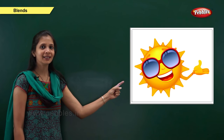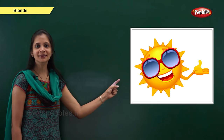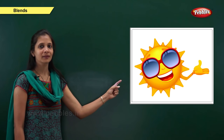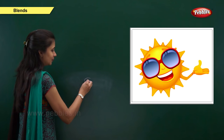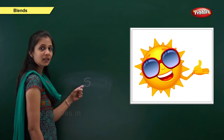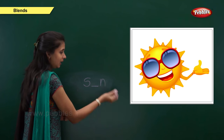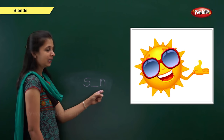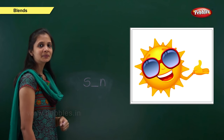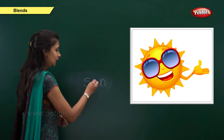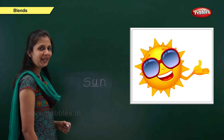Next one. Which picture is this? Yes, it is sun. What is the sound of this word? It is s, a, n. When the sound is 's', the letter is s. When the sound is 'n', the letter is n. When the sound is 'a', the vowel is u. So: s, a, n — sun. S, u, n — sun.